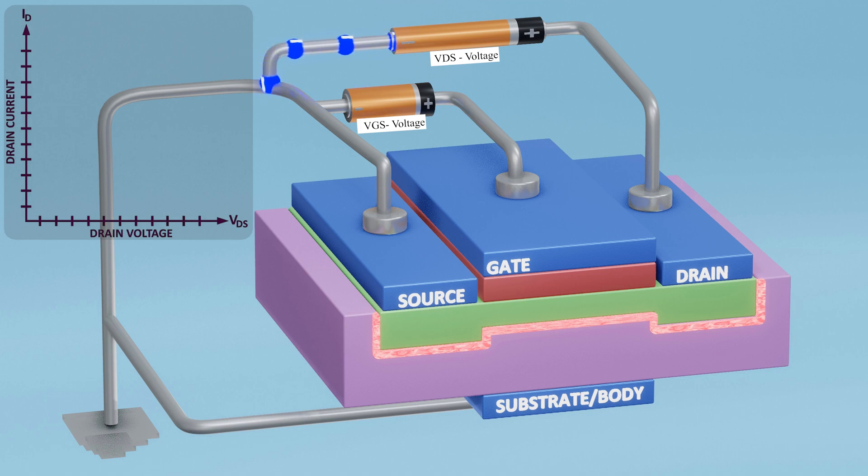With the channel now created, current can flow from the drain to the source through the channel. However, it's important to note that the conventional current flows from drain to source, but the actual flow of electrons is in the opposite direction, that is from source to drain.